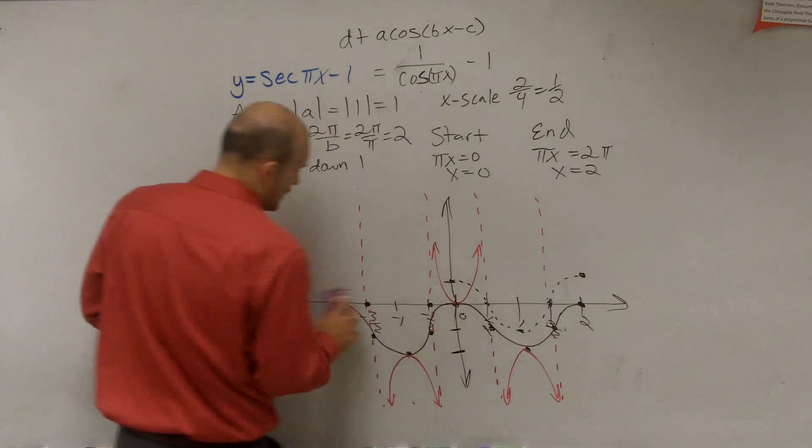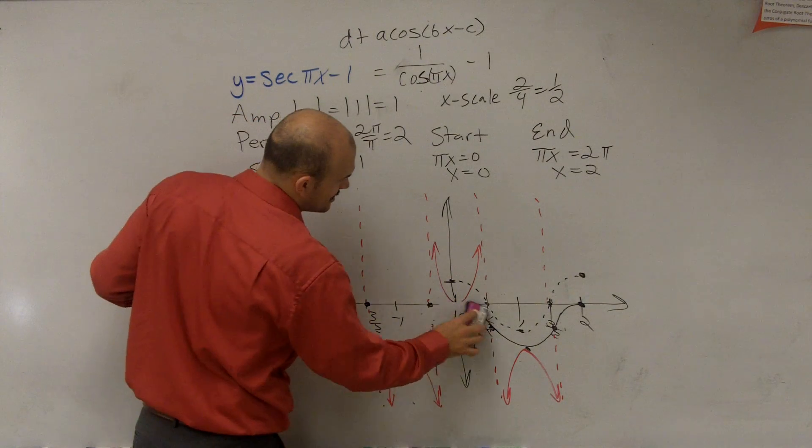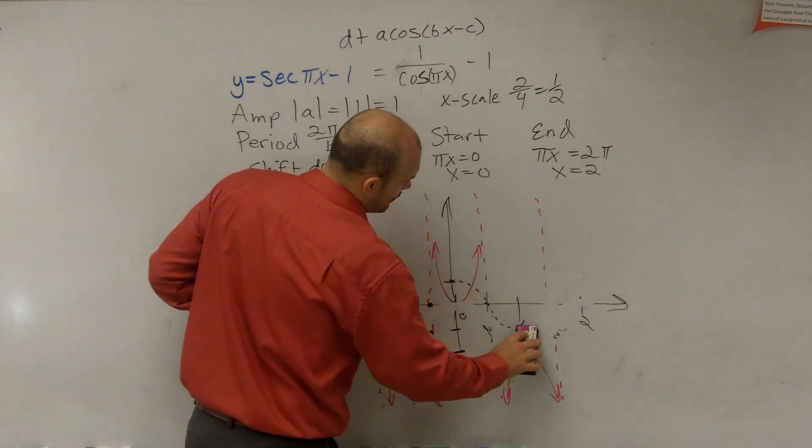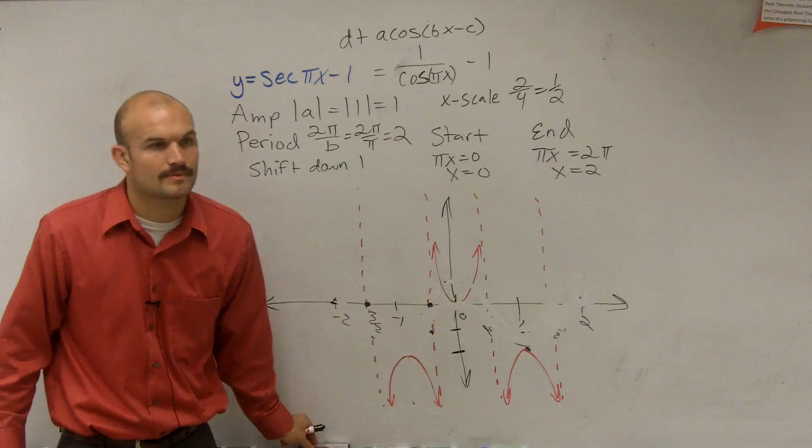So to finalize my graph, I don't want to show the cosine graph. That's not a part of the secant graph. We use it as an aid, but it's really not a part of our graph. So your final graph is going to look something like that.